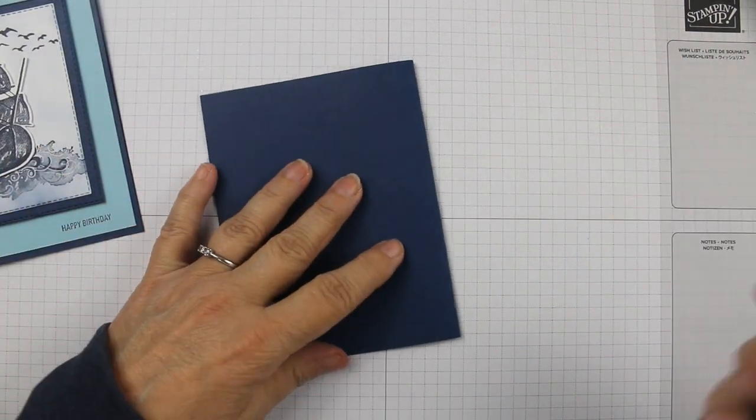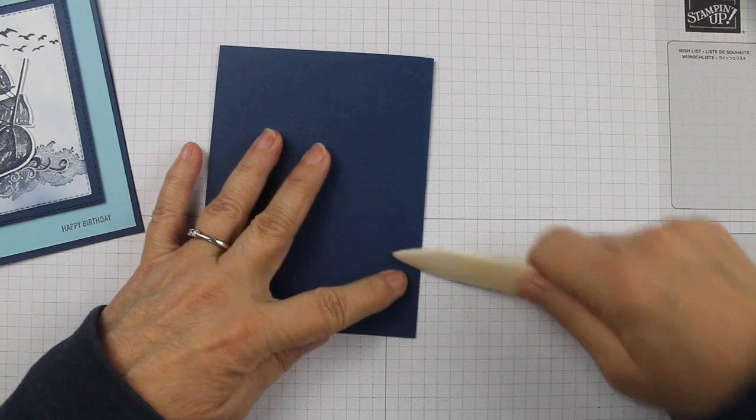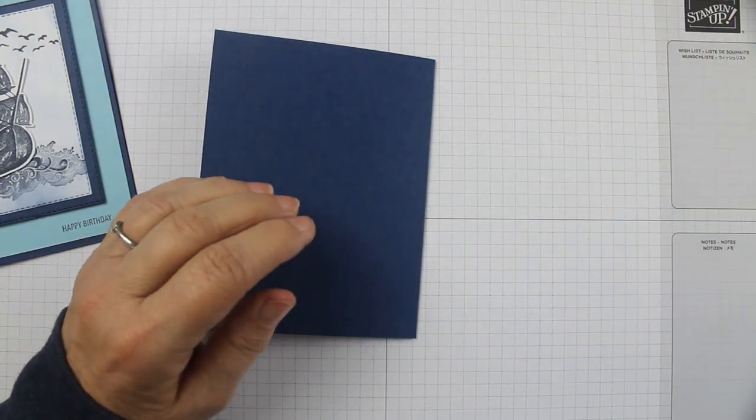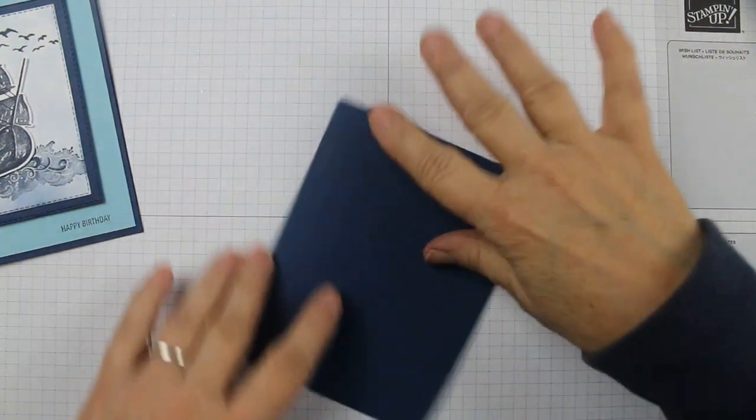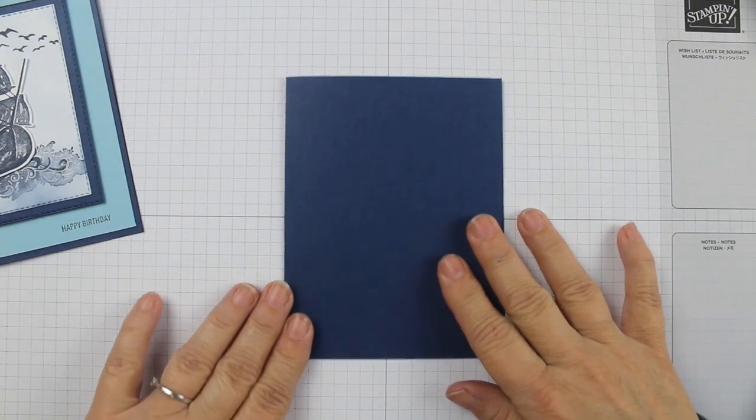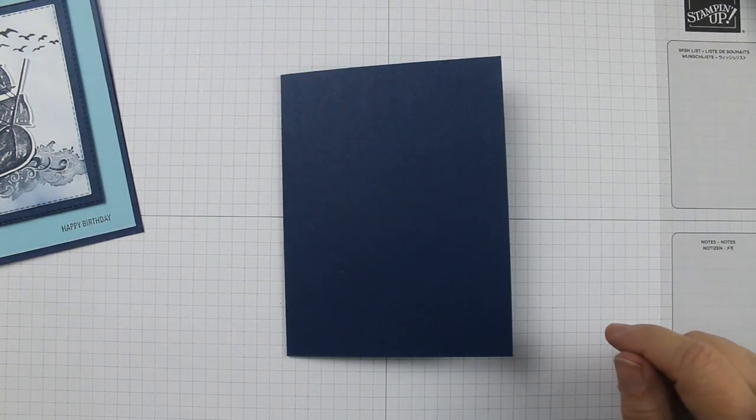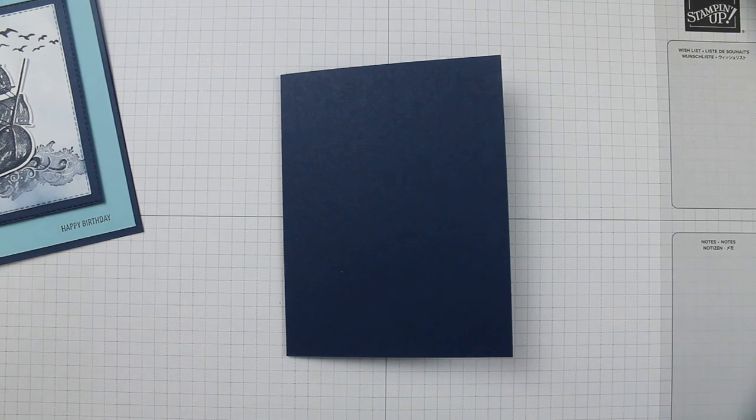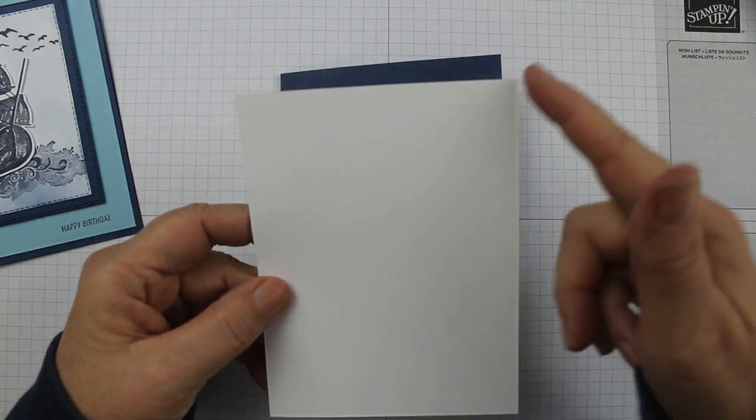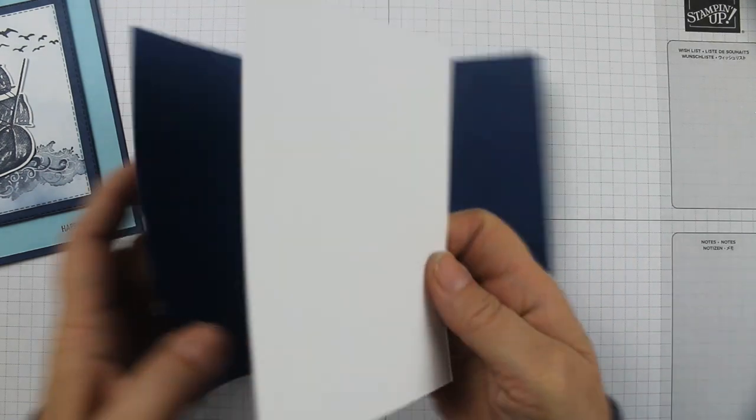If you don't have a bone folder, you can use a block or anything to make it lay flat a little better. Then I took a piece of basic white cut 5.25 by 4 inches, and that's going to get glued to the inside.